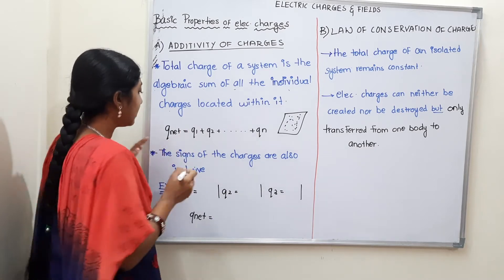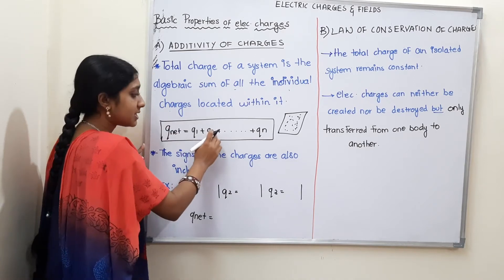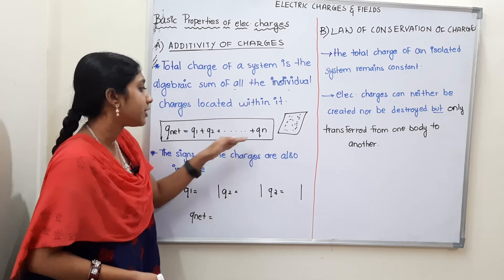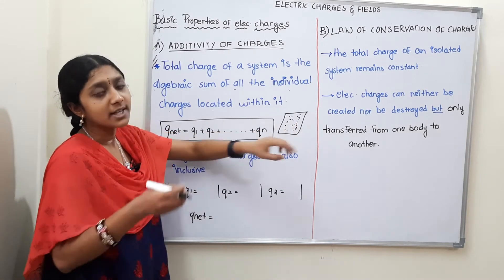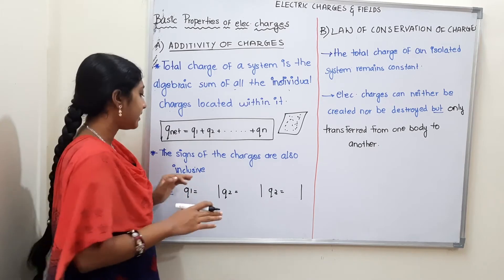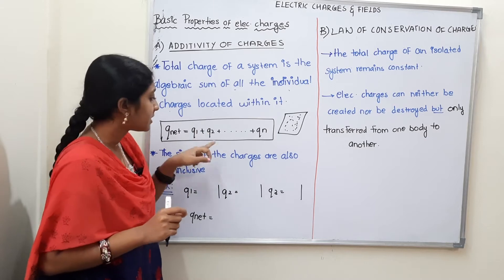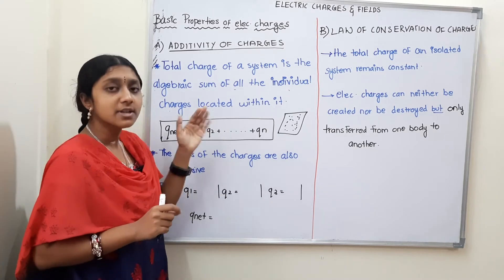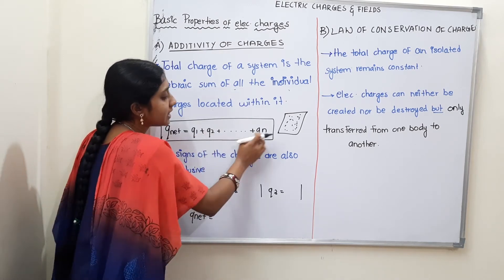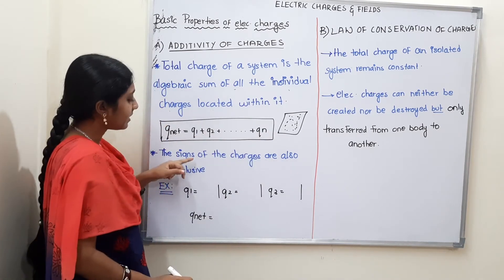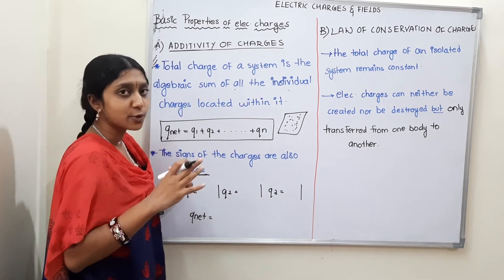So what do we say? Q net is equal to Q1 plus Q2, and so on for any number of charges — we will add them all. The important point is that the signs of the charges are also inclusive. So if there is a plus, we add plus; if there is minus, we add minus. Q net equals Q1 plus Q2 up to Qn, and the signs of the charges are inclusive.